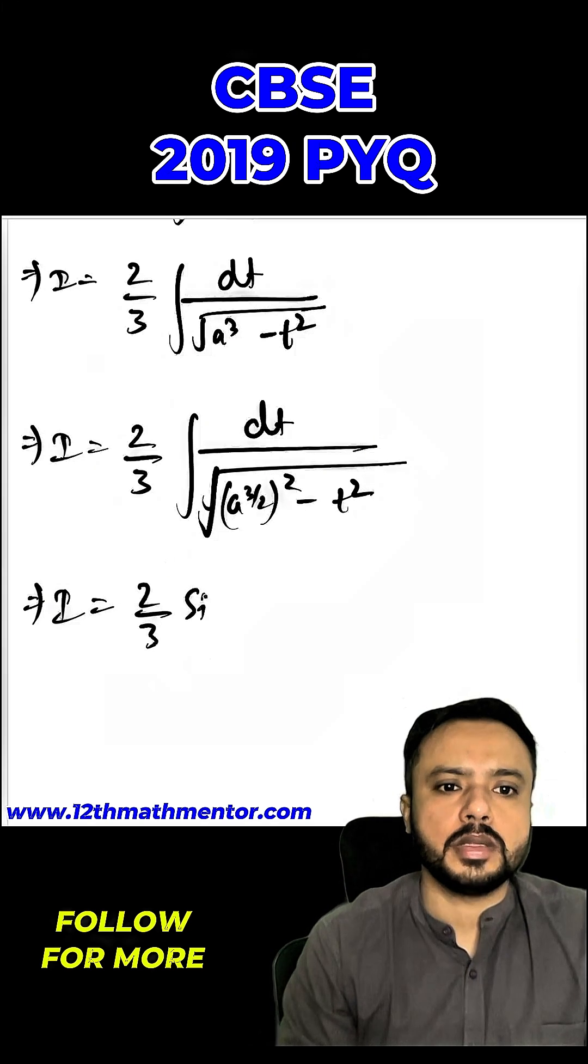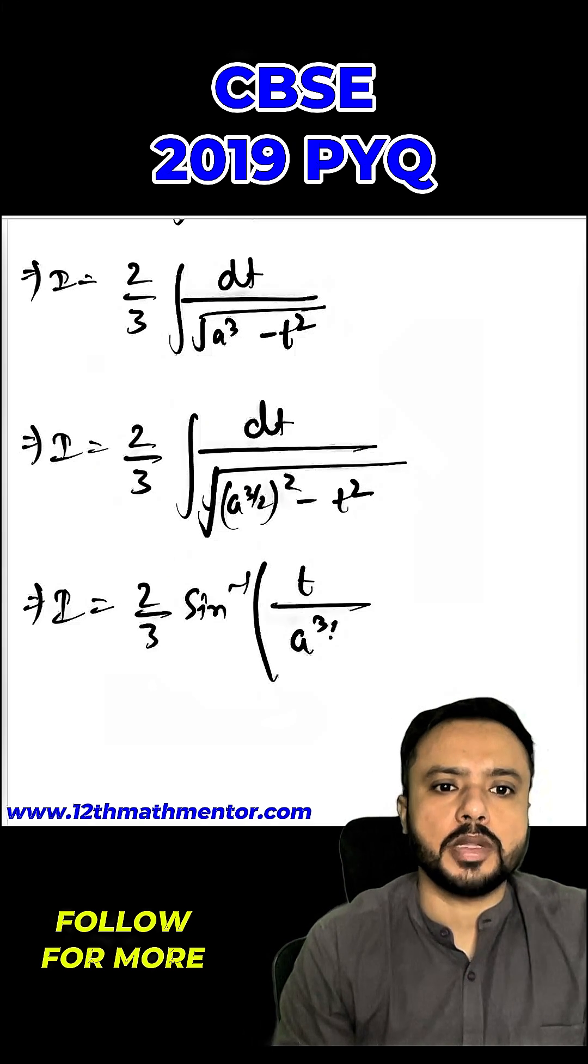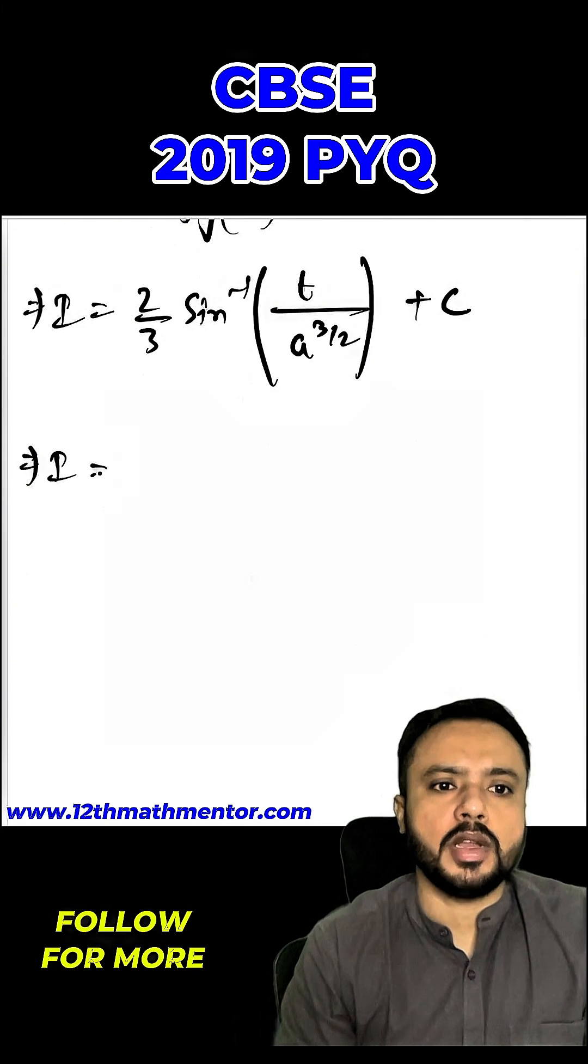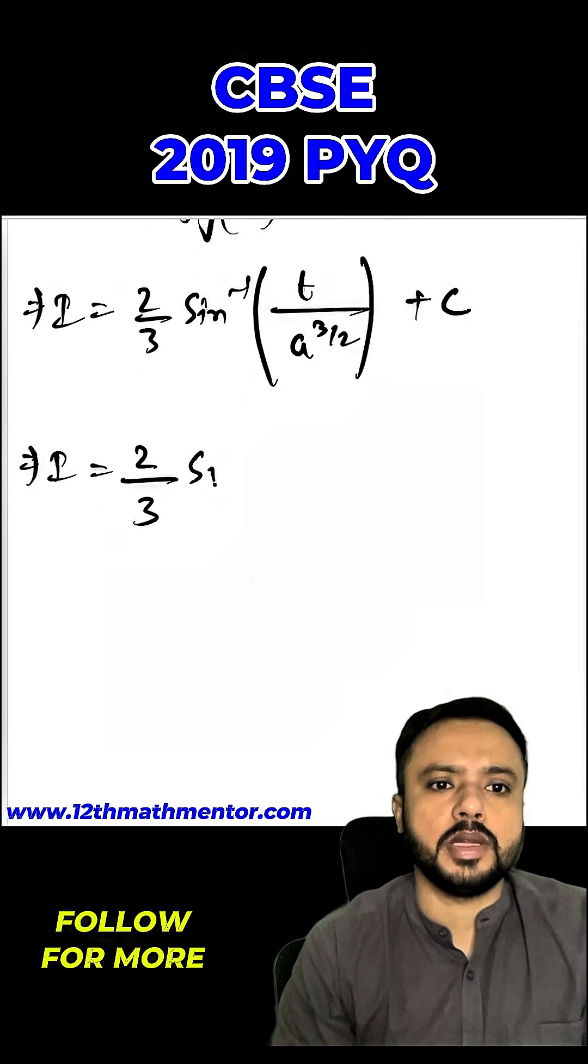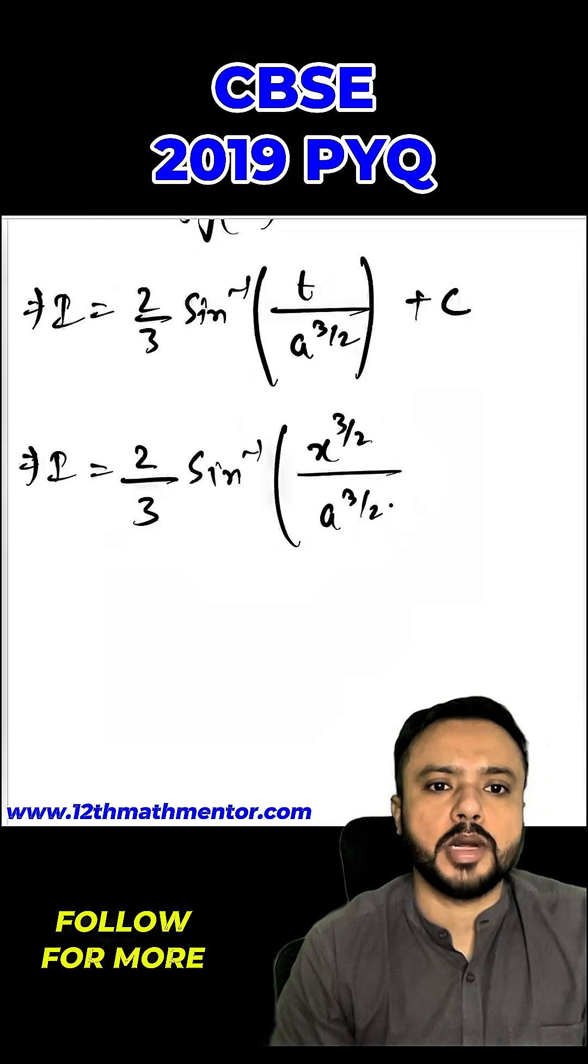So I would be equal to 2 by 3 sine inverse t by a raised to the power 3 by 2 plus c. So now I can finally substitute the value of t, which is 2 by 3 sine inverse, so t value was x raised to the power 3 by 2 upon a raised to the power 3 by 2 plus c. So this is my desired answer.